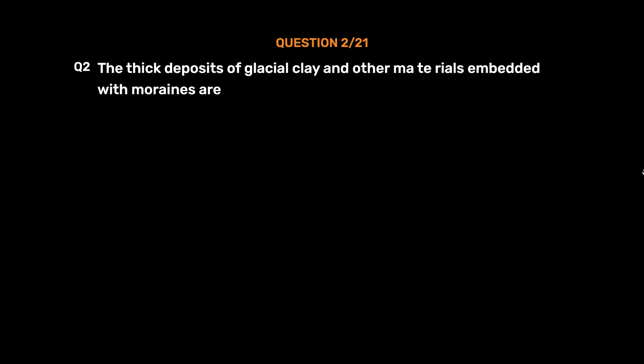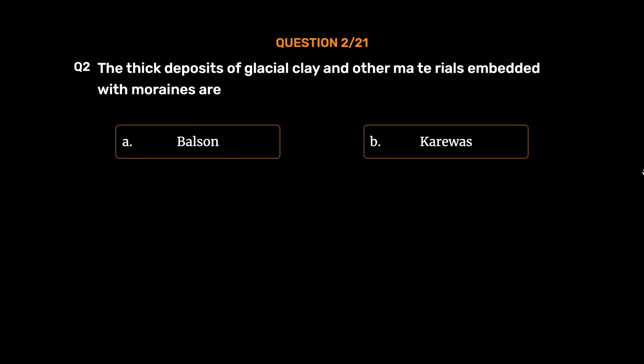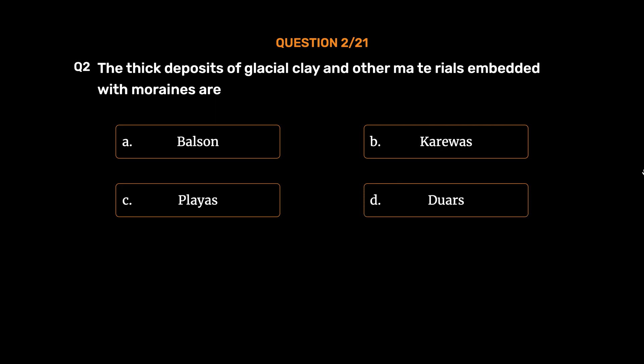Question number 2: The thick deposits of glacial clay and other materials embedded with moraines are — Option A: Bolson. Option B: Karewas. Option C: Playas. Option D: Duars. The correct answer is Option B, Karewas.